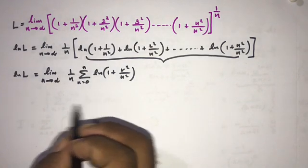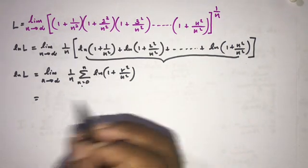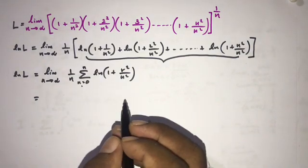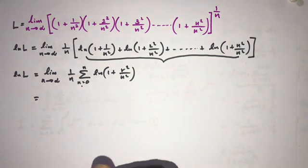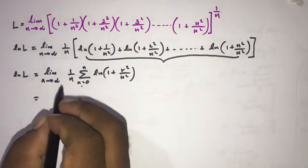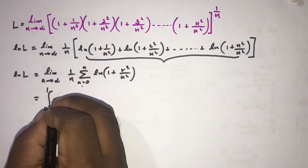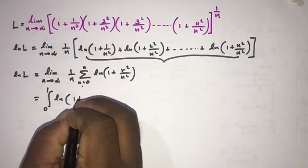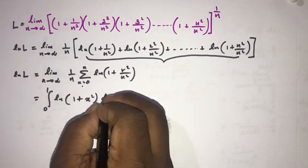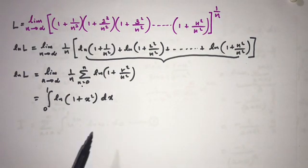This form is familiar — we know how to convert this Riemann sum as a definite integral. We discussed this in detail in a previous video, and I will add the link in the description. So we can write this as the integral from 0 to 1 of natural log(1 + x²) dx.